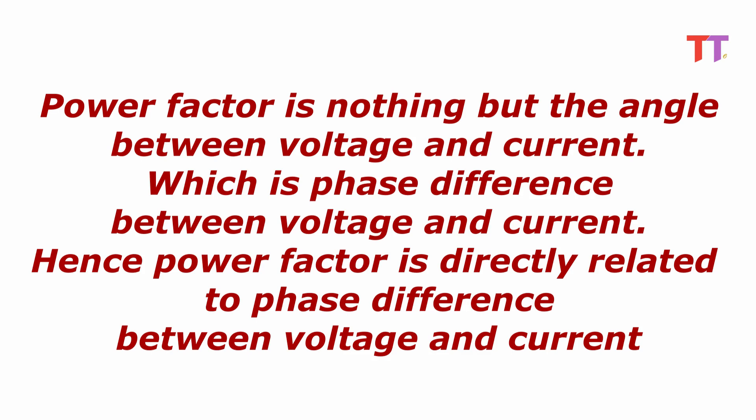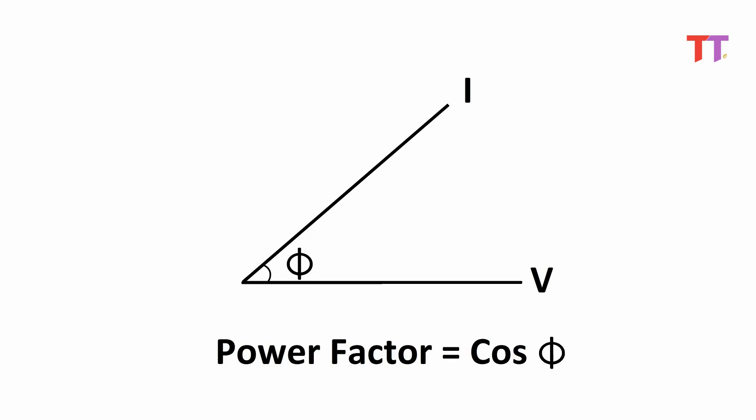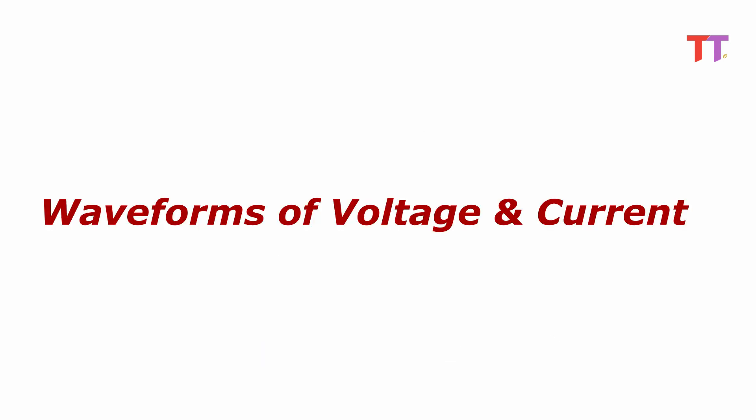Power factor is nothing but the angle between voltage and current, which is the phase difference between voltage and current. Hence power factor is directly related to phase difference between voltage and current. Here we can see the phasor diagram of voltage and current of AC power supply. If we consider voltage as reference and phi as the angle between voltage and current, then power factor is cos of phi.